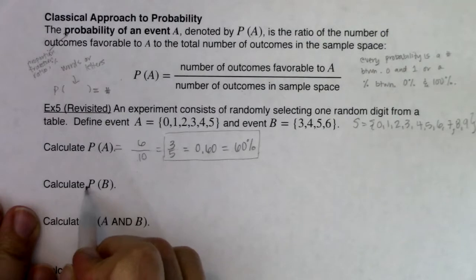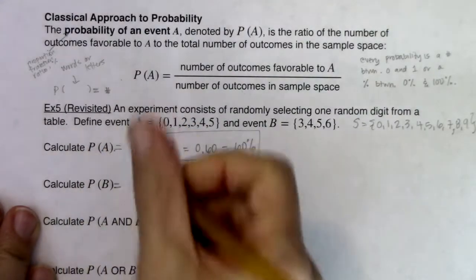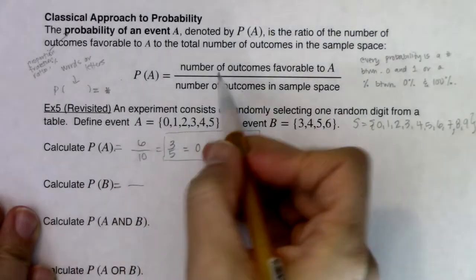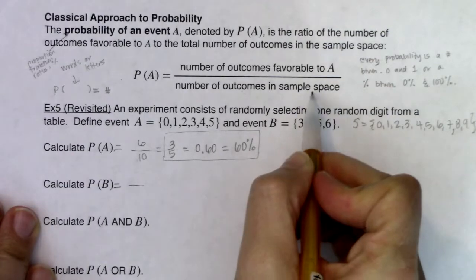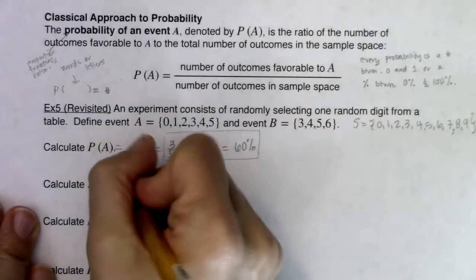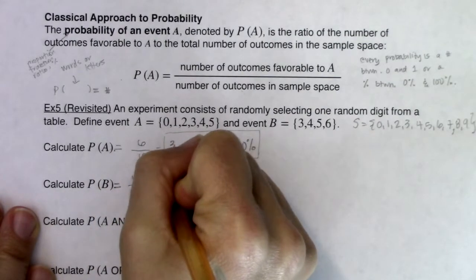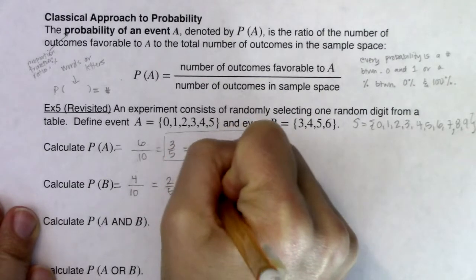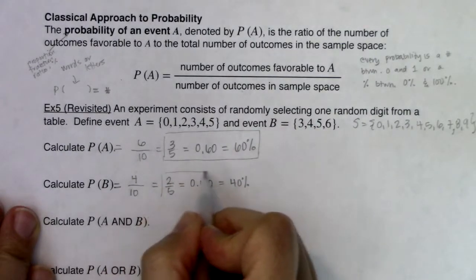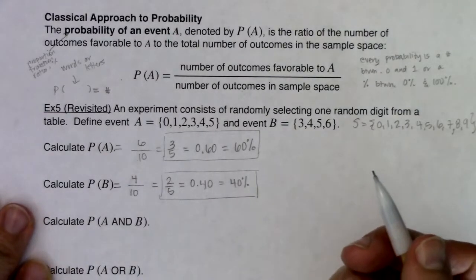Let's calculate the probability of B. You owe me a number between zero and one, so I put the equal sign. The number of outcomes favorable to B in ratio to the number of outcomes in the sample space: event B had four outcomes, the sample space has ten. Reducing that gives two out of five; plugging into a calculator gives 0.40, or 40%. From here on I'll go with the decimal version.